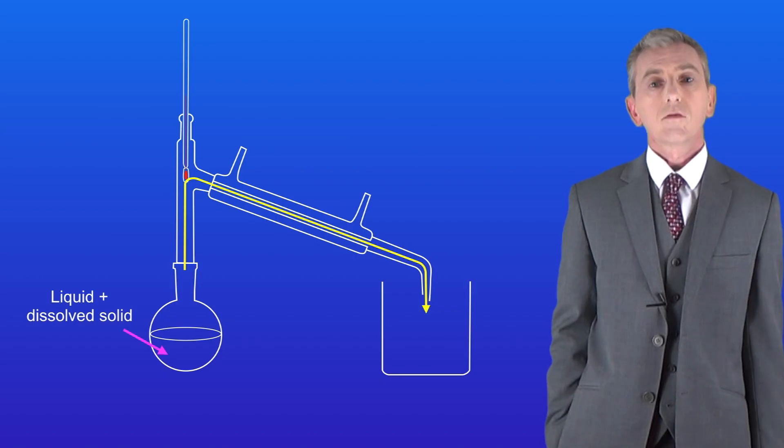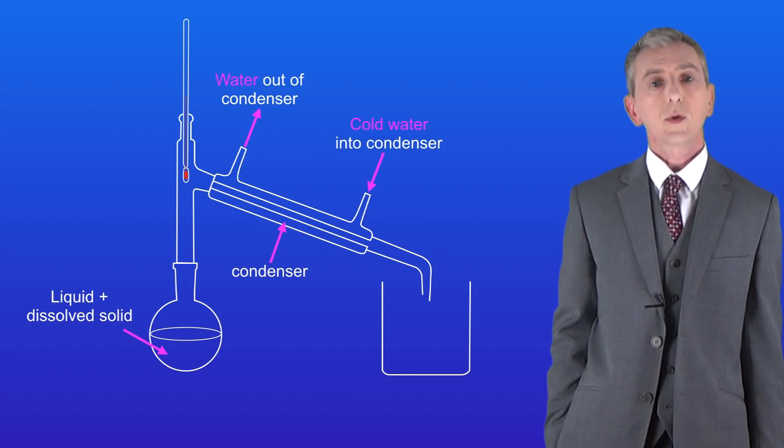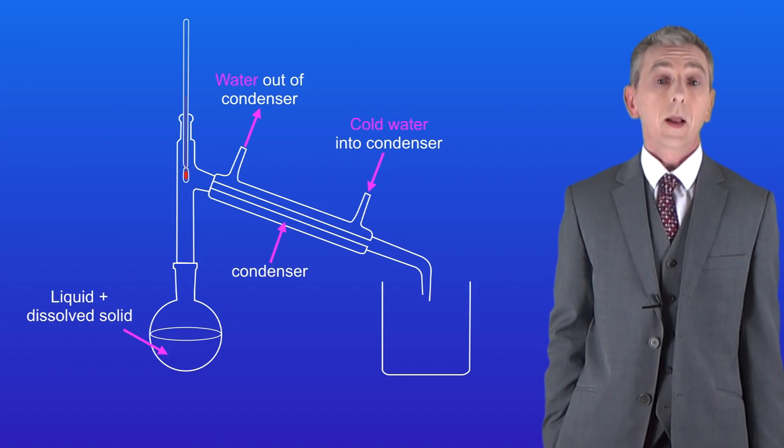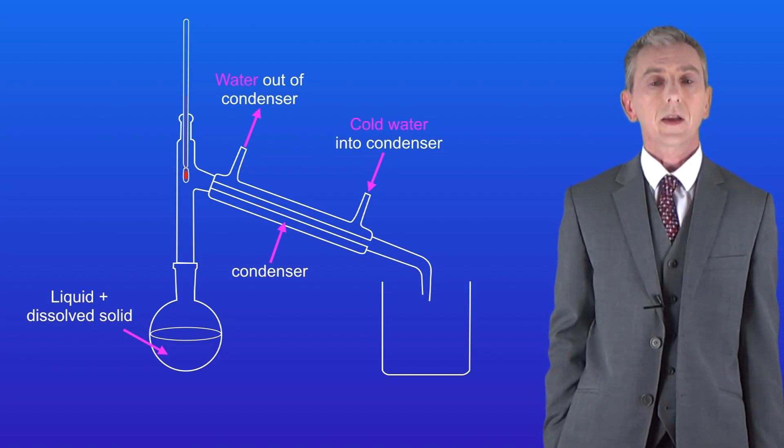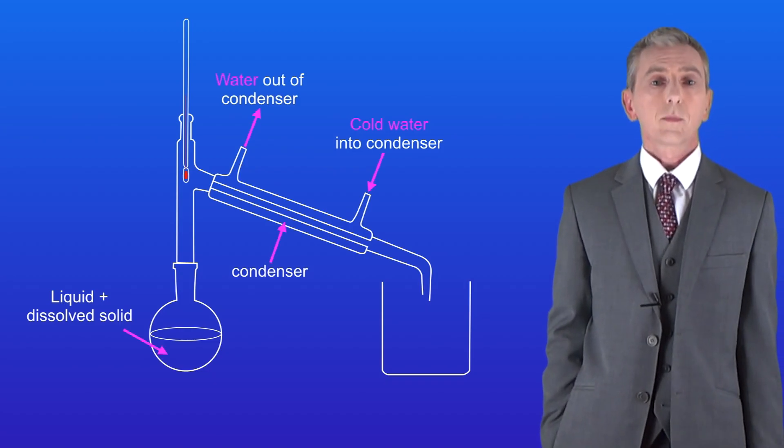The glass tube is surrounded by a jacket which we call the condenser. Cold water from the tap continuously runs through the condenser and by doing this it keeps the internal glass tube cold. After running through the condenser the water simply goes down the sink.